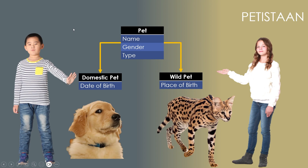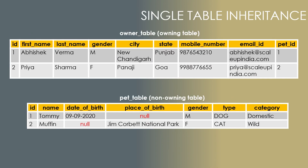Before moving to the joined inheritance strategy, let me remind you what we were doing. We used to have a Pet class with common variables like name, gender, and type. We decided to provide the scenario of inheritance in a pet application by dividing them into different parts — one being the domestic pet and the other the wild pet. For domestic pet we have date of birth, and for wild pet we have place of birth.